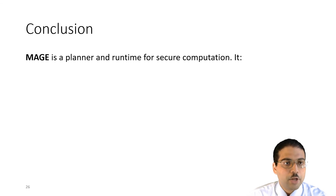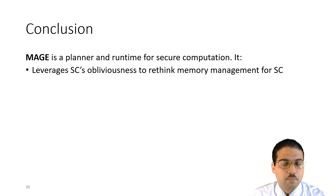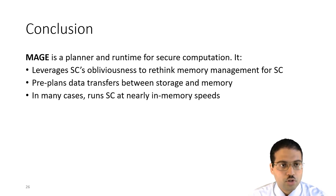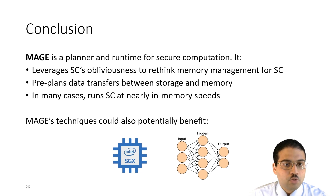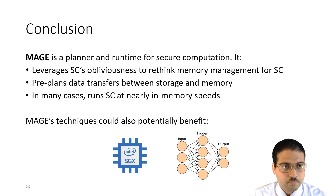In conclusion, MAGE is a planner and runtime for secure computation. It leverages secure computation's obliviousness to rethink memory management, pre-plans data transfers between memory and storage, and in many cases runs secure computation at nearly in-memory speeds. As a parting thought, there are oblivious applications outside of secure computation — including applications written for hardware enclaves designed to be oblivious against side channels, and certain ML applications like neural network inference that are oblivious by nature — so MAGE's techniques could potentially benefit such applications as well.